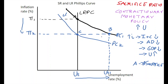This sacrifice ratio depends on the size and slope of the Phillips Curve and how quickly expectations of inflation adjust. If they take a long time to adjust, then there's an awful lot of unemployment that has to be sacrificed.